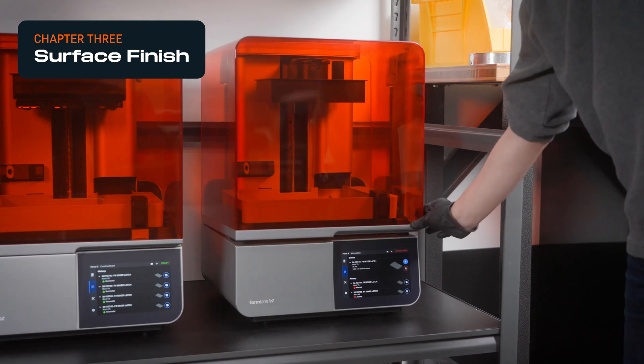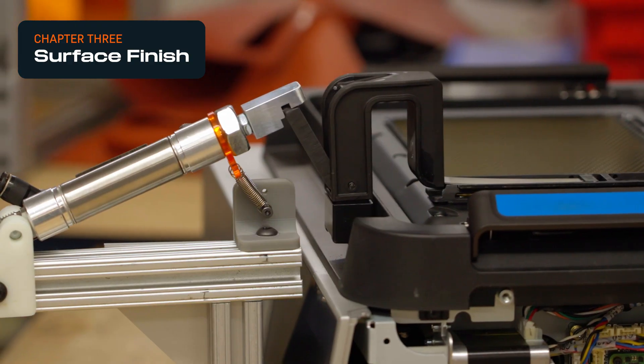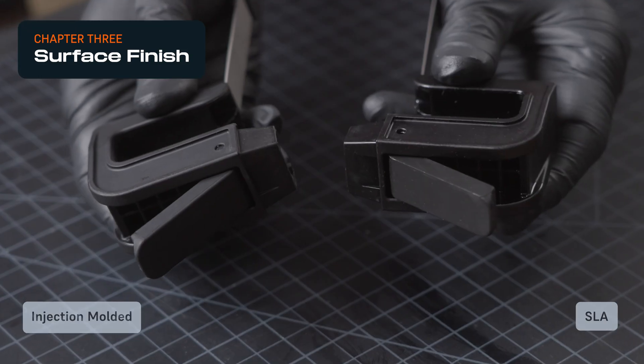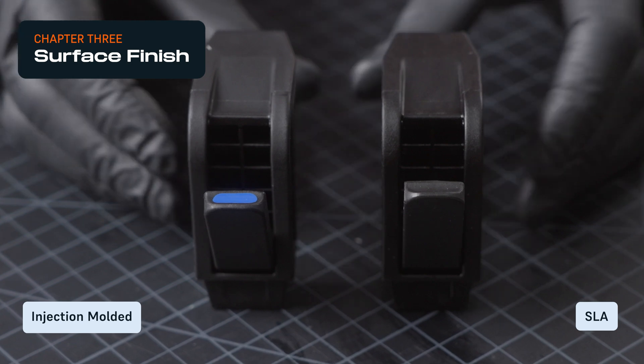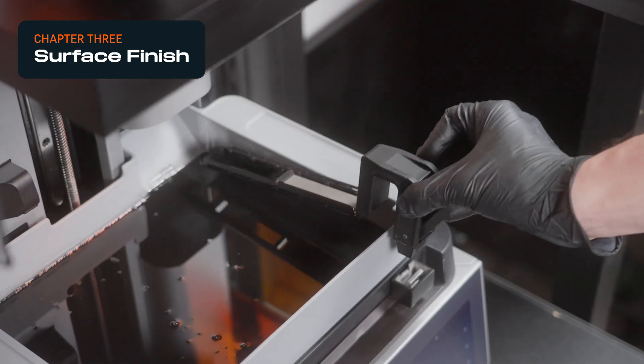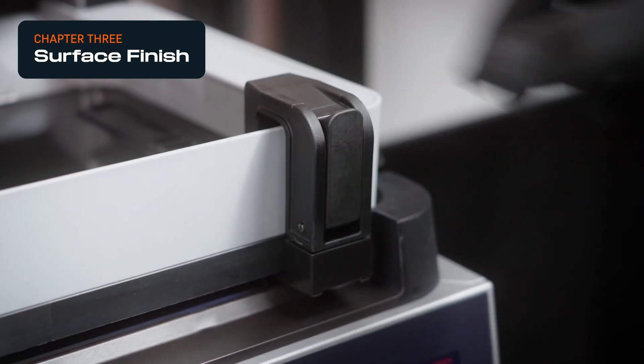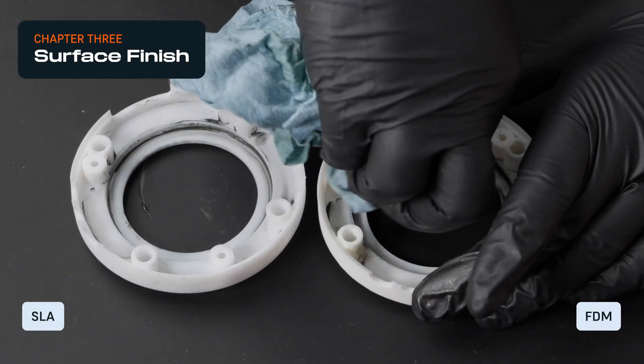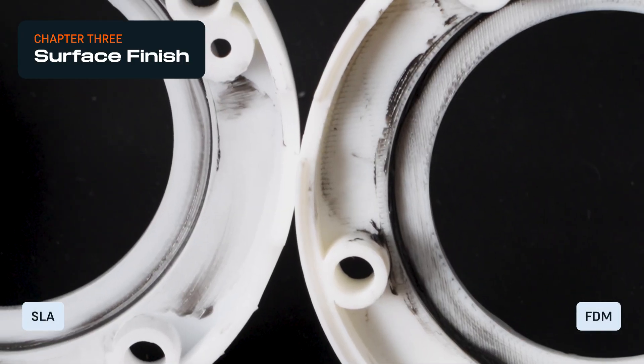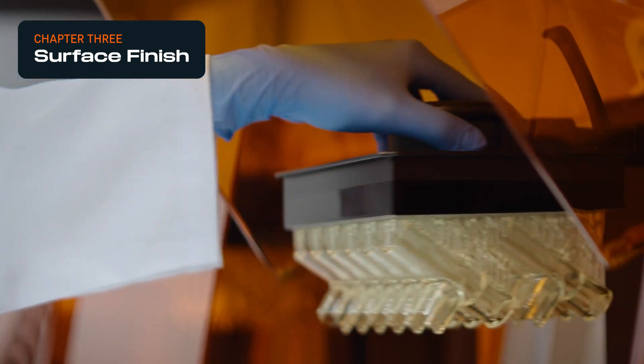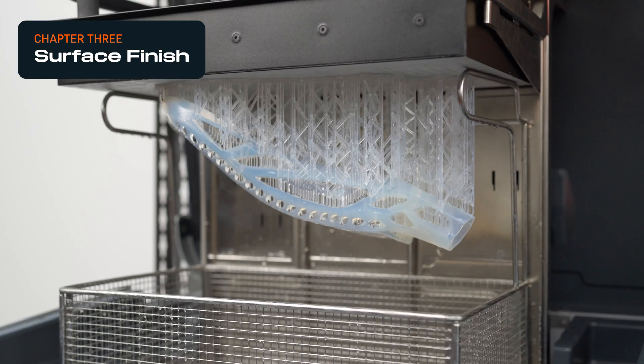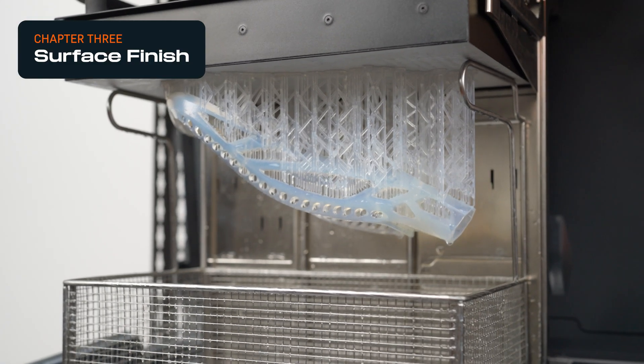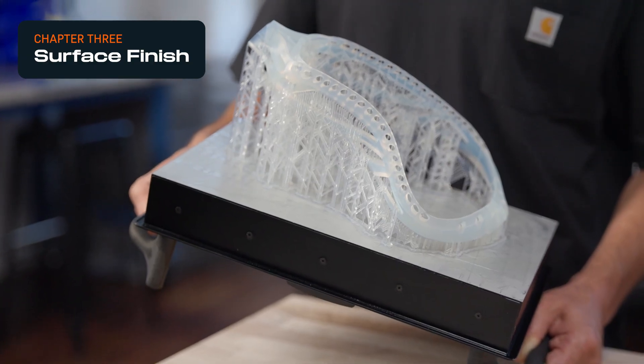SLA 3D printers create parts that are nearly indistinguishable from injection-molded plastics. Their superior surface finish is ideal for final design review prototypes and end-use products, even in the consumer goods category where surface finish and smoothness are of the utmost importance. Furthermore, the lack of layer lines allows SLA 3D printers to create almost completely transparent parts.